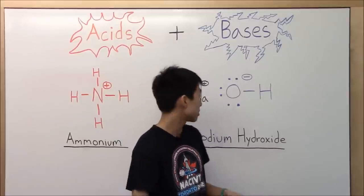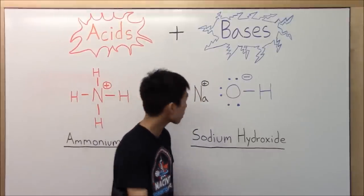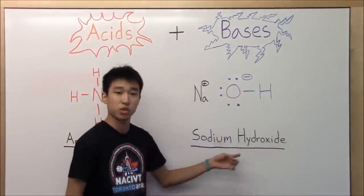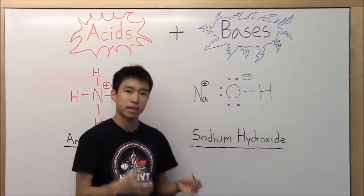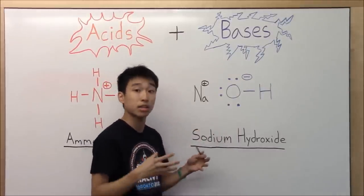And then for bases, it's like the complete opposite. Bases such as sodium hydroxide, they have electrons or pairs of electrons that can form nice, sturdy, strong, solid, firm bonds with hydrogen.